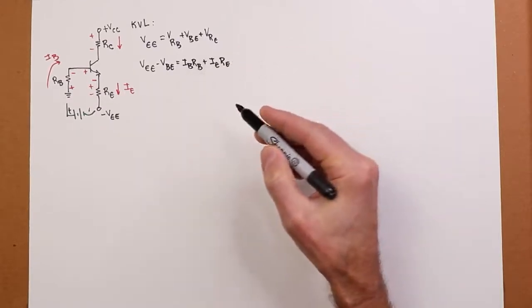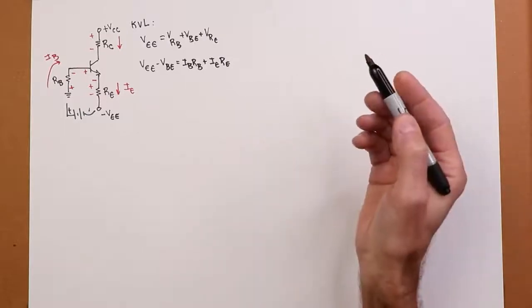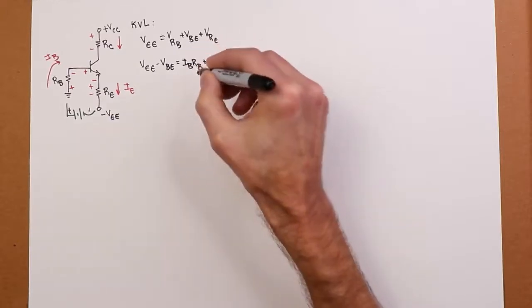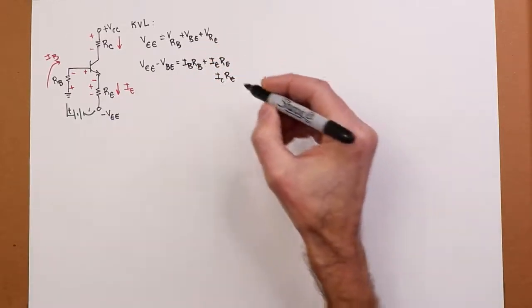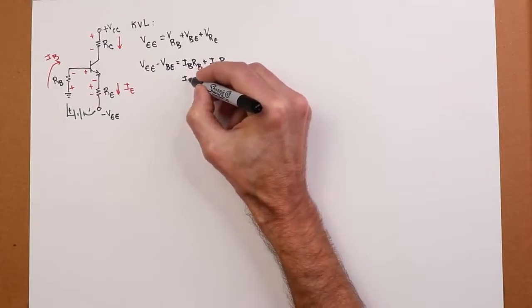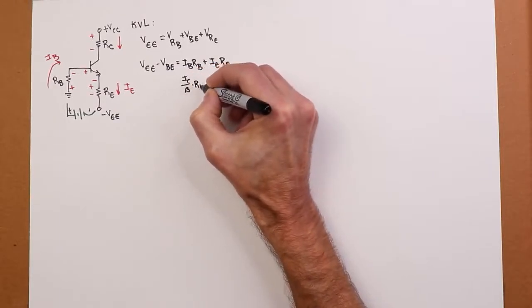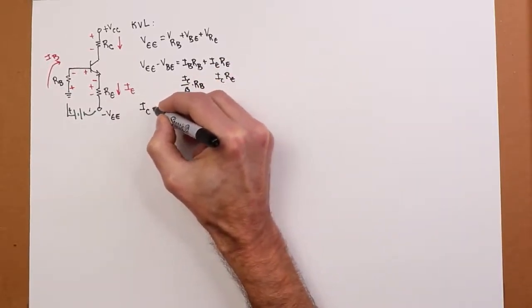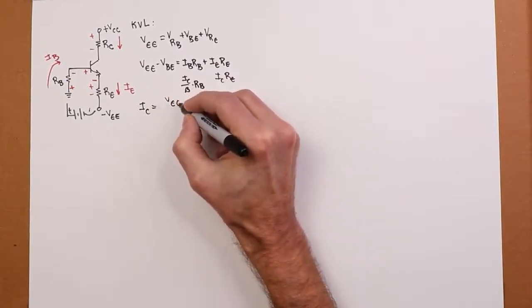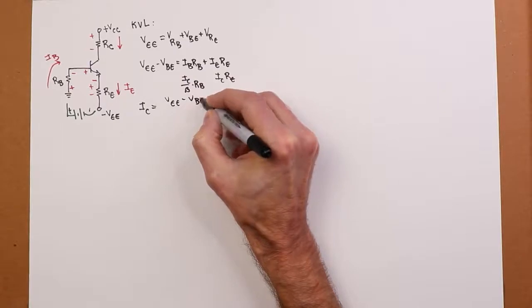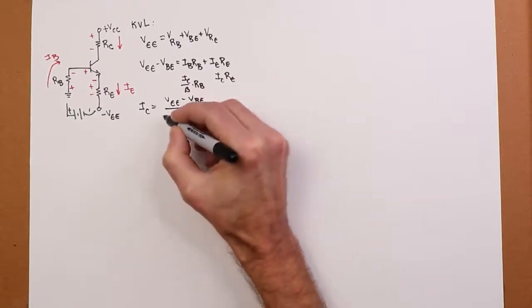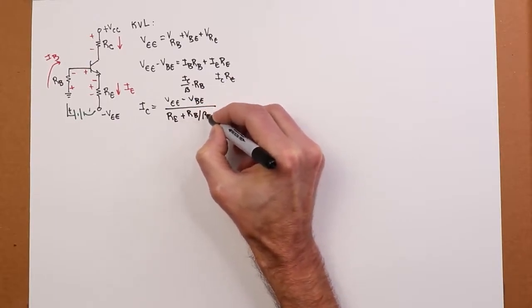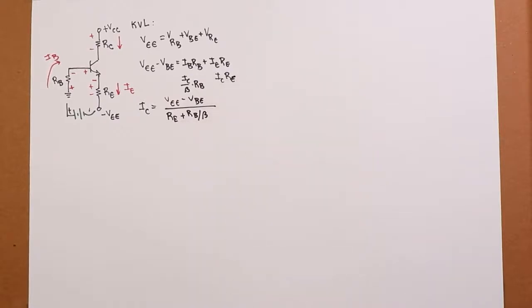Now we're just going to turn these into Ohm's Law equivalents. I'll bring the VBE over because that's a constant as well. So V of RB is IB times RB, and V of RE is IE times RE. Now, if we approximate the emitter current as equal to the collector current, we can call this IC times RE, and then IB we know is IC divided by beta. So I'll plug that in, IC divided by beta times RB. Now solve this in terms of IC.